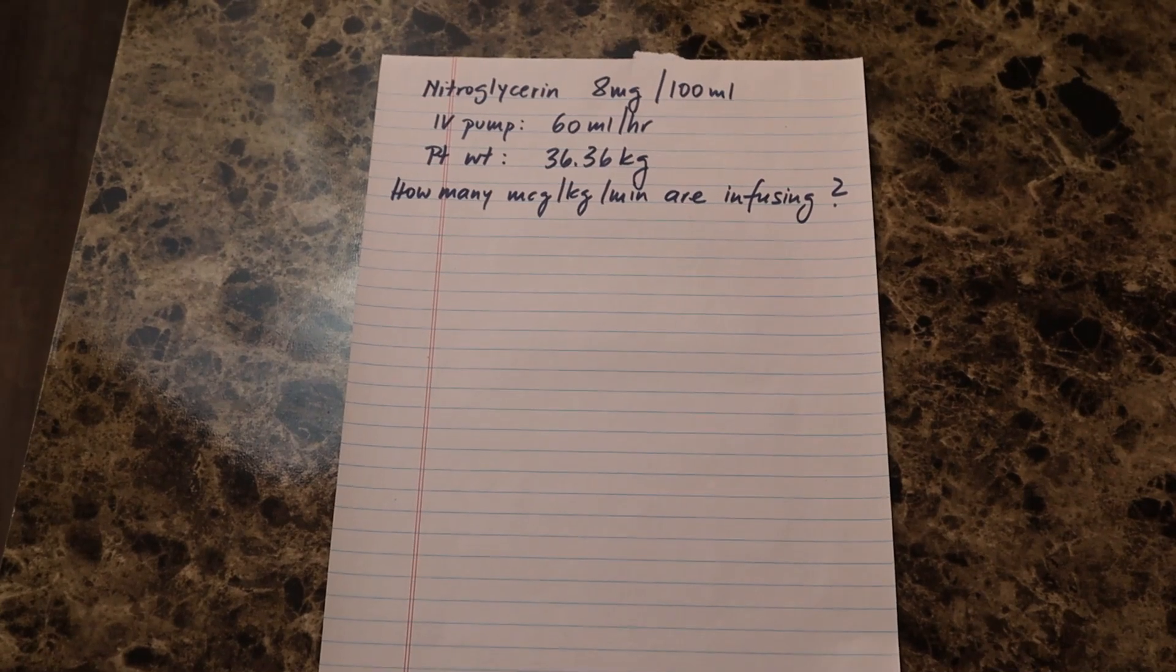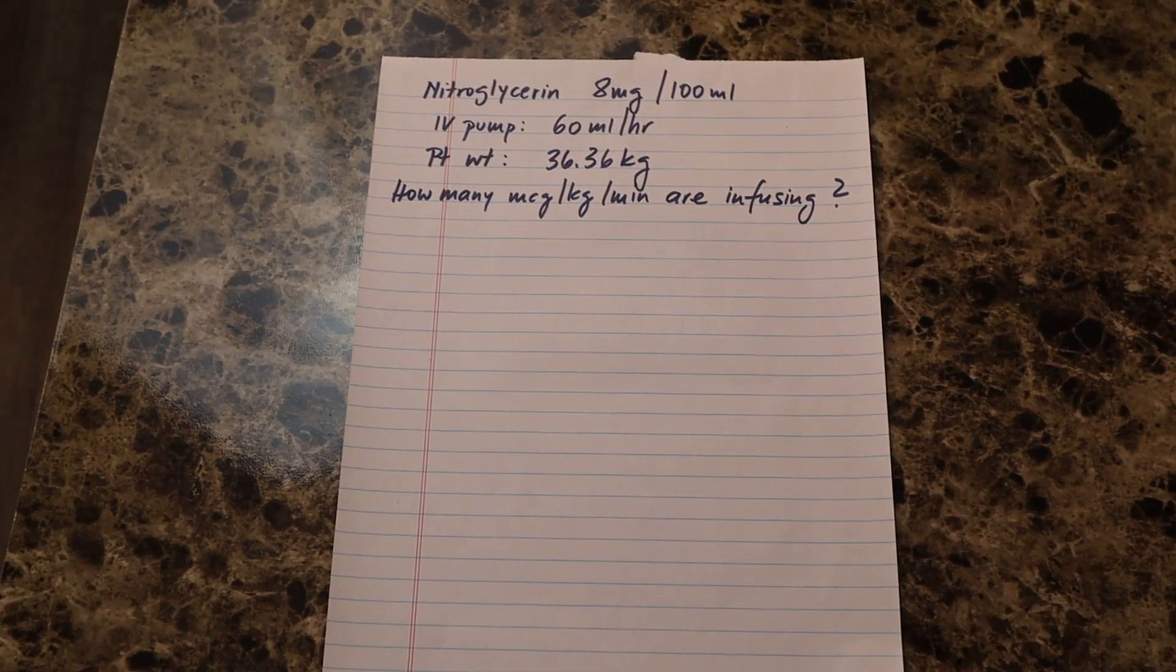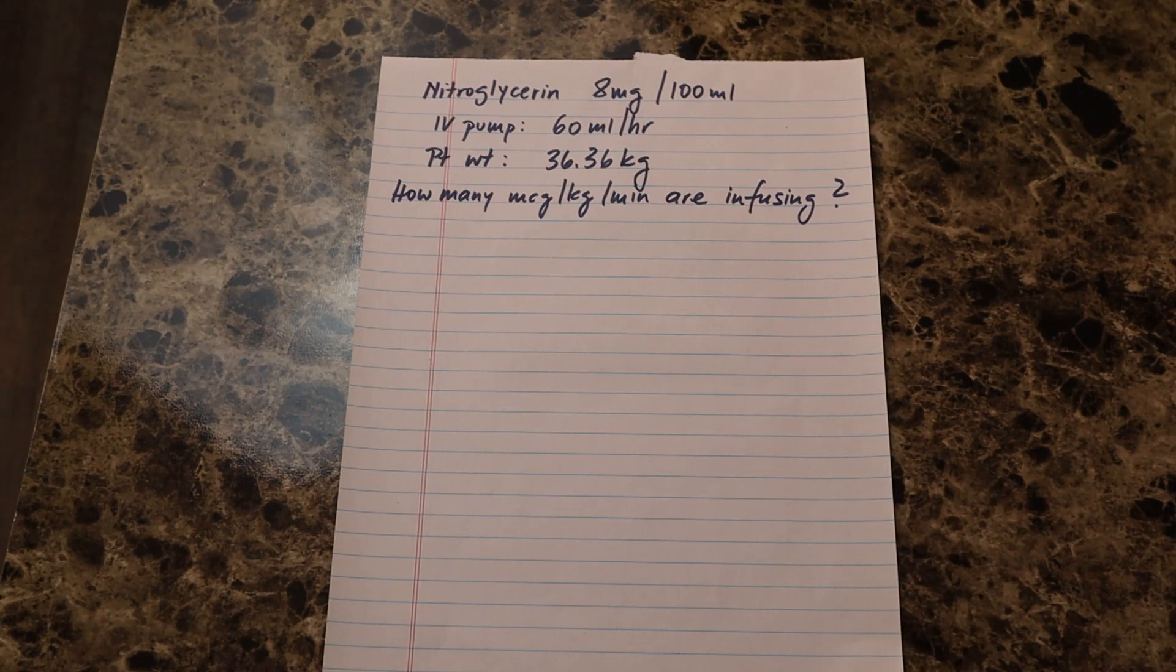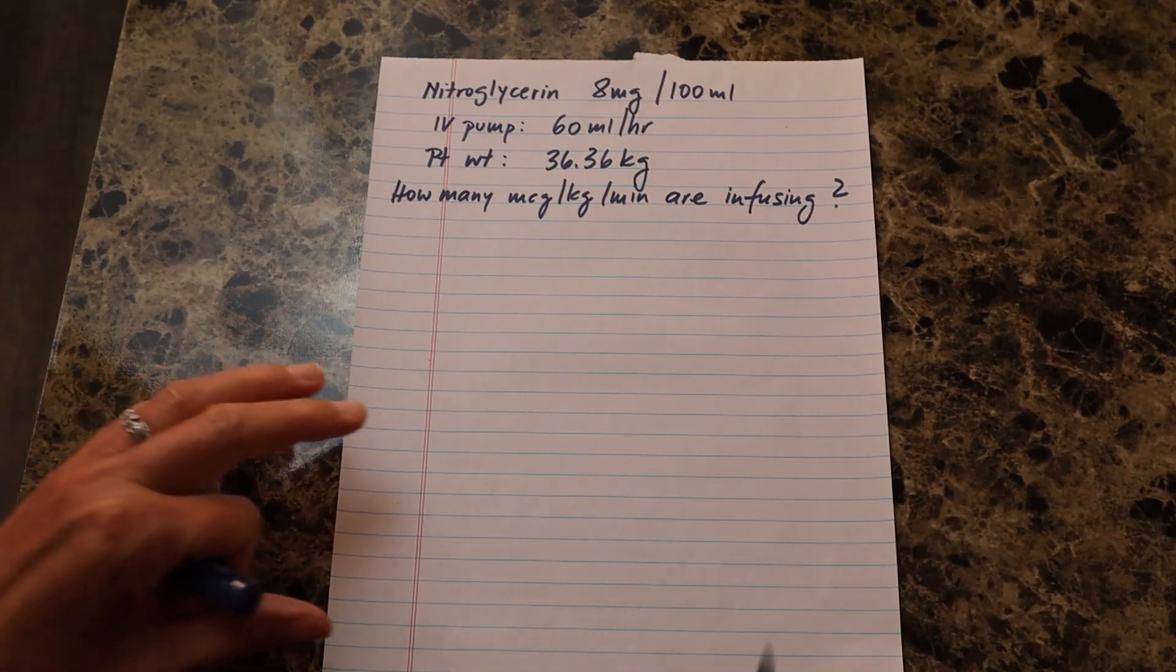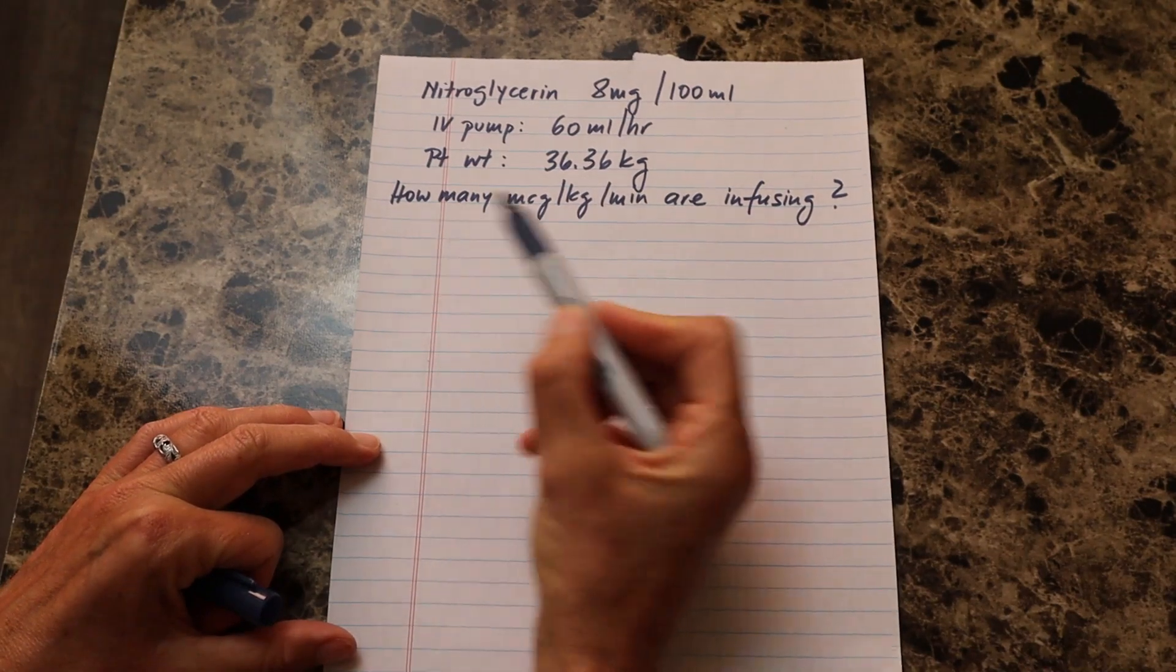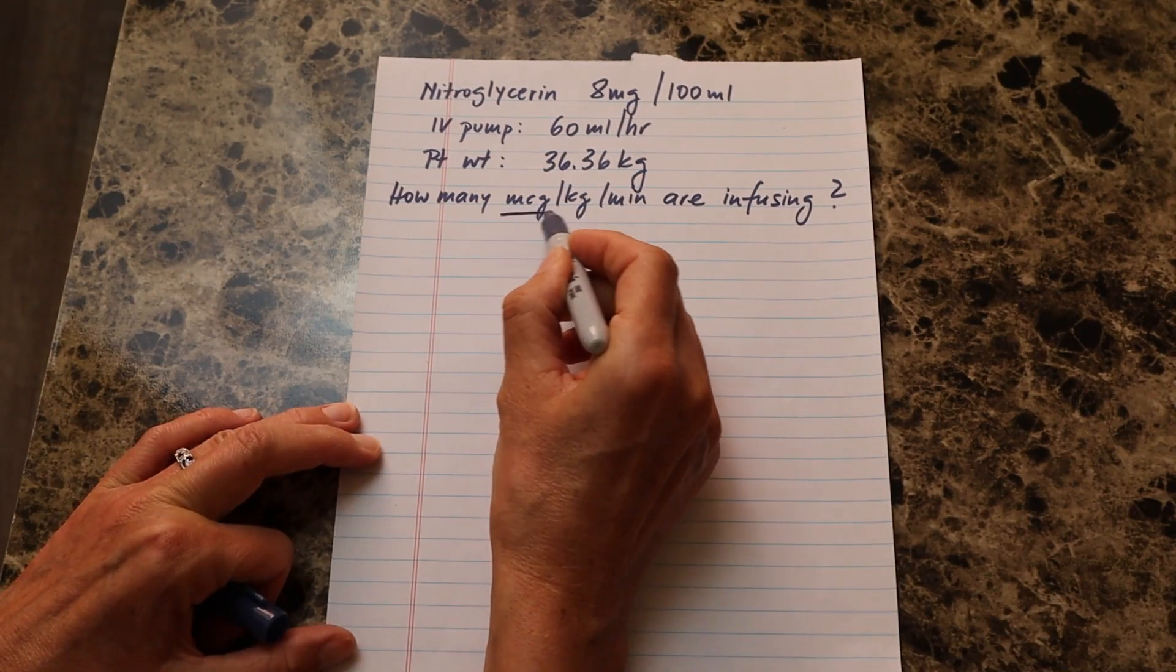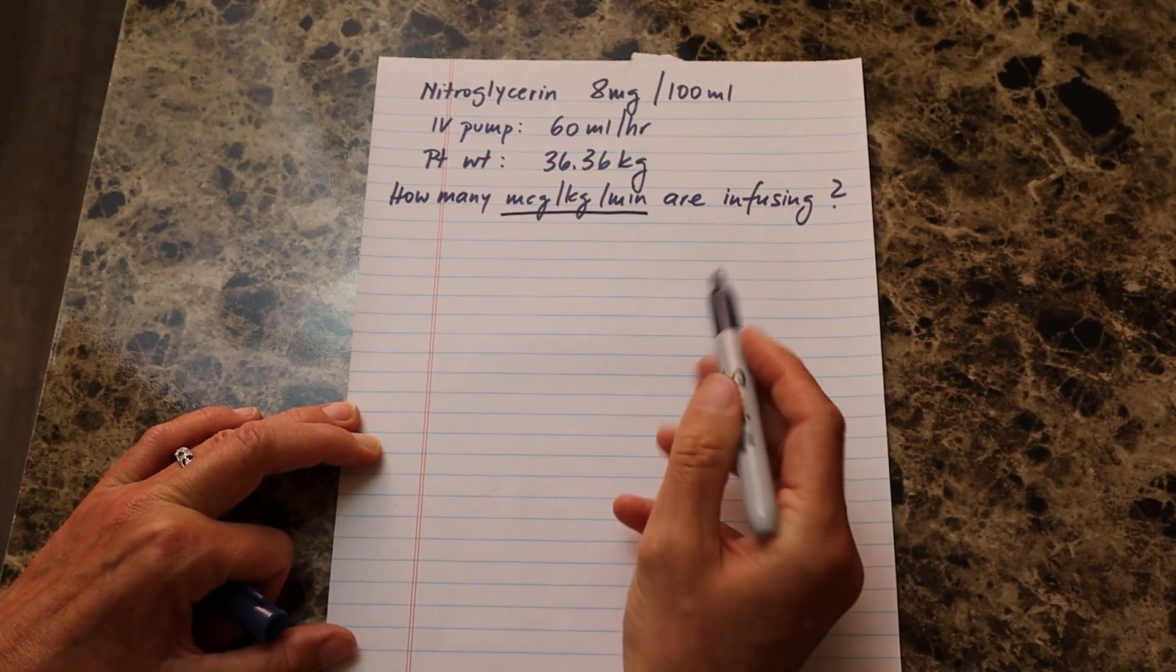So first of all, we have nitroglycerin that's given to us in a dosage or in the bag that's available at 8 milligrams per 100 mls. And then the IV pump settings are 60 milliliters per hour. The patient's weight is 36.36 kilograms. And the question now is how many micrograms per kilo per minute are infusing?